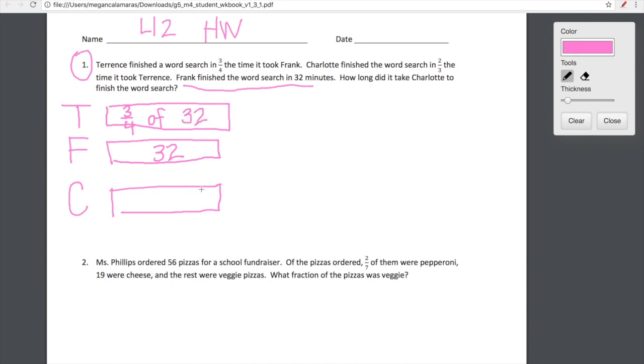We are flat out given this information. Frank finished the word search in 32 minutes. So Frank is 32 minutes. Terrence is three fourths the time it took Frank. So Terrence is three fourths of Frank, which is 32.